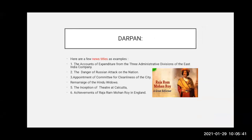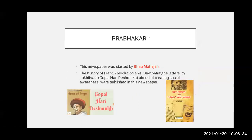Here are a few news titles from Darpan as examples of events of those times: the accounts of expenditure from the three administrative divisions of the East India Company; the danger of Russian attack on the nation; appointment of a committee for cleanliness of the city; remarriage of Hindu widows; the inception of theatre at Calcutta; and achievements of Raja Ram Mohan Roy in England. The reporting of such news throws light on various historical events of those days.